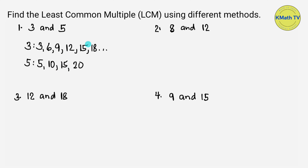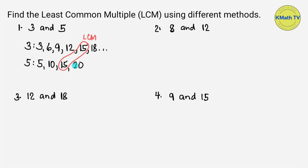The number present in the multiples of both 3 and 5 is 15. So this is the least common multiple of 3 and 5 — this is the LCM. It is the smallest number that is a multiple of both 3 and 5.